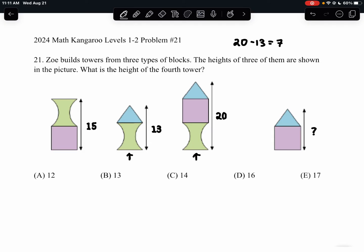And that means that the purple square, which again is the only thing that's different between the two, must have a height of 7 units.